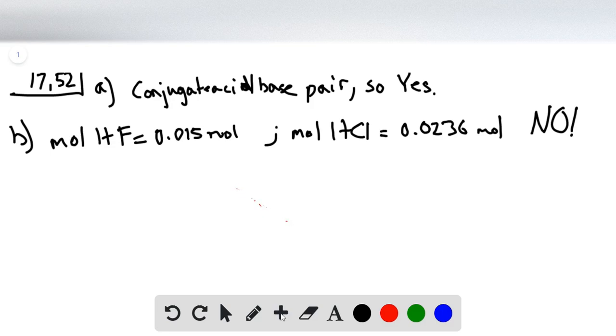So for part c, we have HF and sodium hydroxide. We can see here just by comparing the concentrations and the volumes, we have the same concentration of both HF and sodium hydroxide, and we have a larger volume of HF. So we're going to have a larger volume of weak base than we do strong acid, so we will form a buffer.